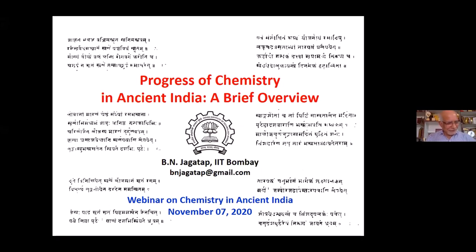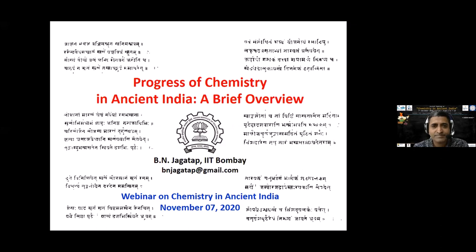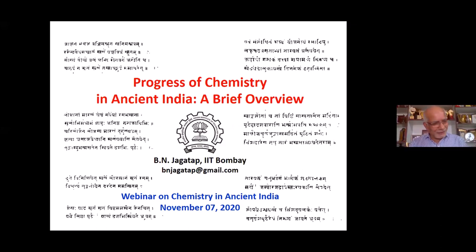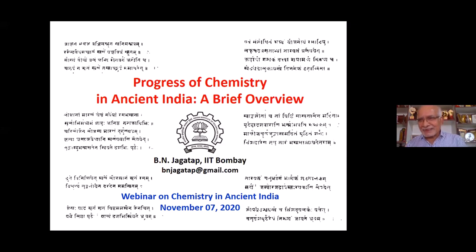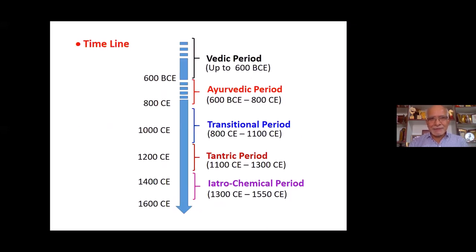Professor Jagatap thanks Professor Reddy for being brief and thanks the organizers for the opportunity. In the next 30 minutes, he will give a brief overview of developments in chemistry in India, spanning almost 3000 years. The timeline for development of chemical sciences runs from prehistoric times to about 1600 AD, where modern chemistry begins, and is roughly divided into five segments.